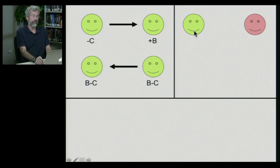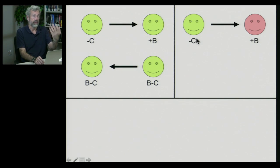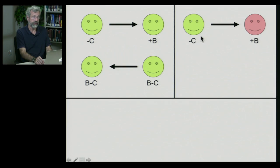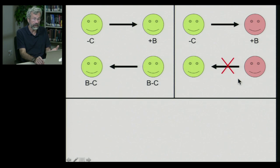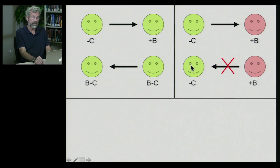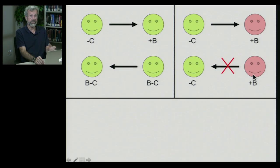On the other hand, if a nice guy meets a jerk, the nice guy goes ahead and confers the benefit, suffering the cost, but then the jerk refuses to reciprocate. At the end, the nice guy is now a sucker — they've paid a net cost and never received anything in return — while the jerk is doing great because he gets a net benefit.